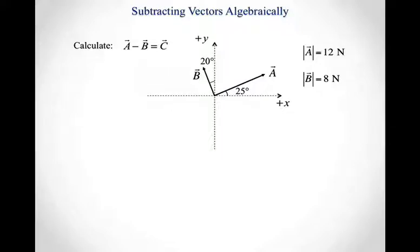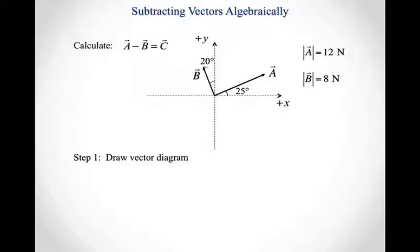We're going to start where we normally do — by making a vector diagram. We've basically already been given that vector diagram in the way our vectors were described. The one piece we'll add is drawing in vector C. Since vector C is vector A minus vector B, we're going to start at the tip of B and draw to the tip of A. So vector C points from B to A as they're both drawn from the same origin.